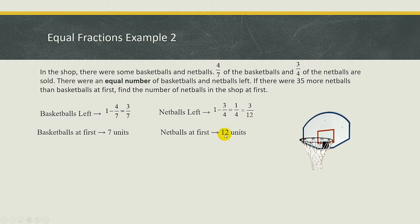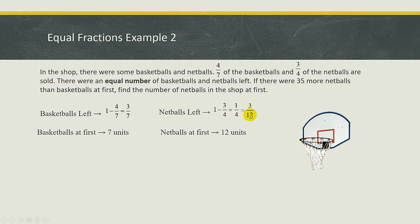So basically, applying the equal fraction concept — after you have made the numerator the same, you simply compare the denominator. This denominator will stand for the number of units of the basketball at first. Take note — this is at first, not the basketball sold. Because the leftover is 3 units, and 7 units will represent the number of basketballs at first. Same thing for netball: the netball's leftover is 3 units, and 12 units is the netball at first.